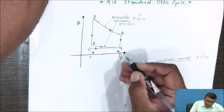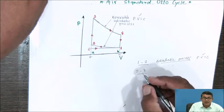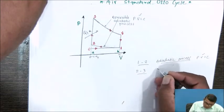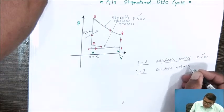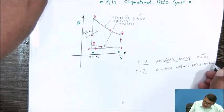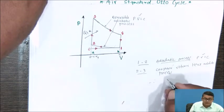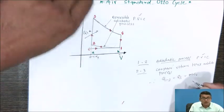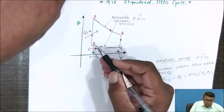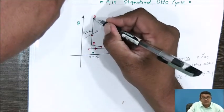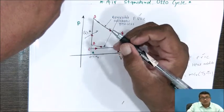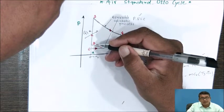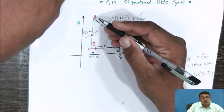Process 2 to 3 is a constant volume heat addition process. Heat is added — Q_in — and volume V2 equals V3. The heat supplied is given by Q_s = m × C_V × (T3 − T2). Temperature rises from T2 to T3, and at point 3 the highest temperature is reached. This is the constant volume heat addition process.